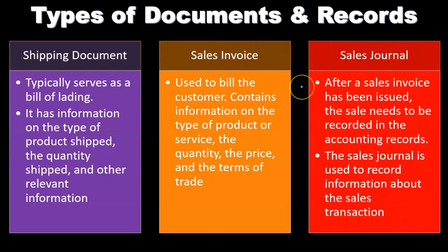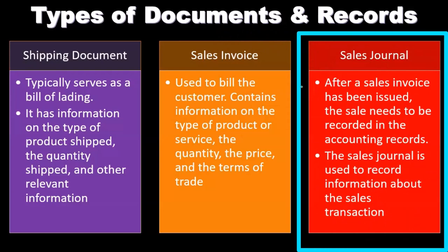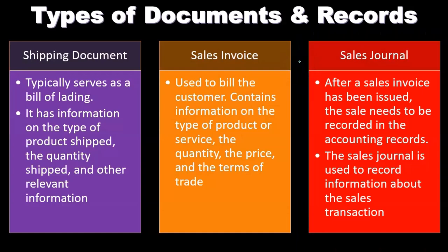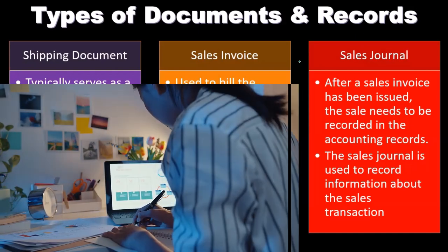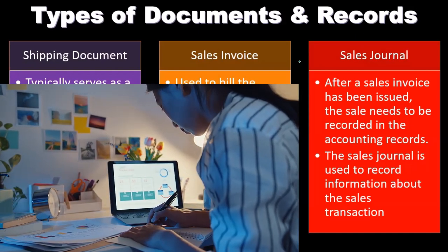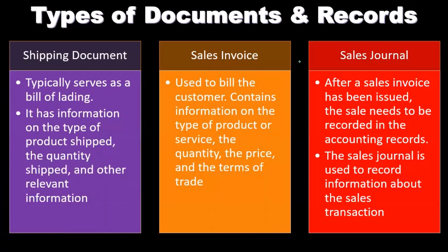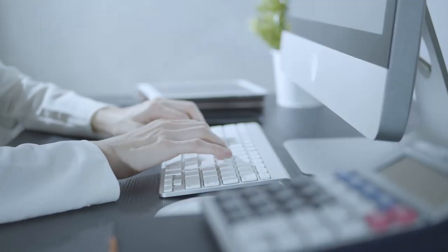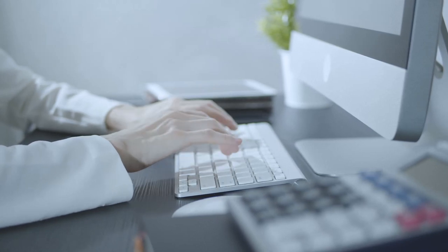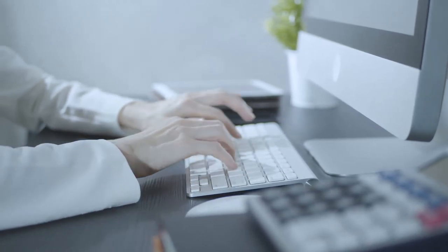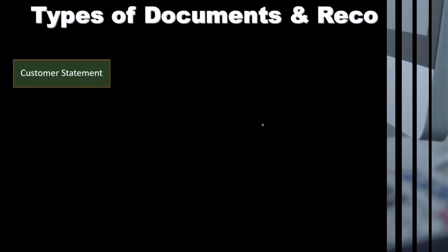The sales journal is used to record information about sales transactions after a sales invoice has been issued. In accounting software, this may be called a sales report or another name. The names can differ across industries and companies, so we need to understand what the general name of the report is and what information we're looking for, so we can recognize that we've gotten the data we need even if it's not named exactly the same.